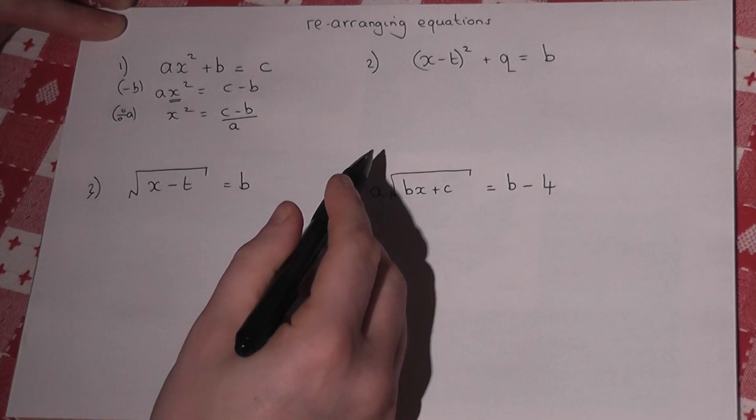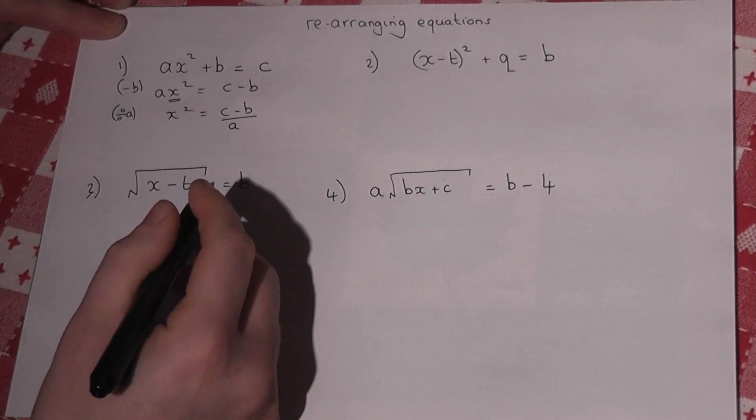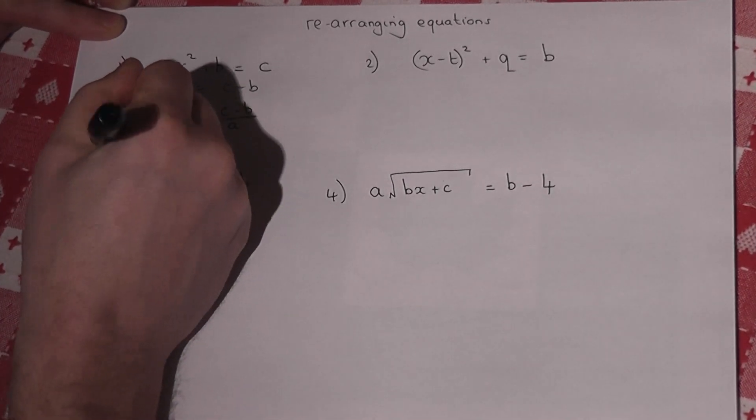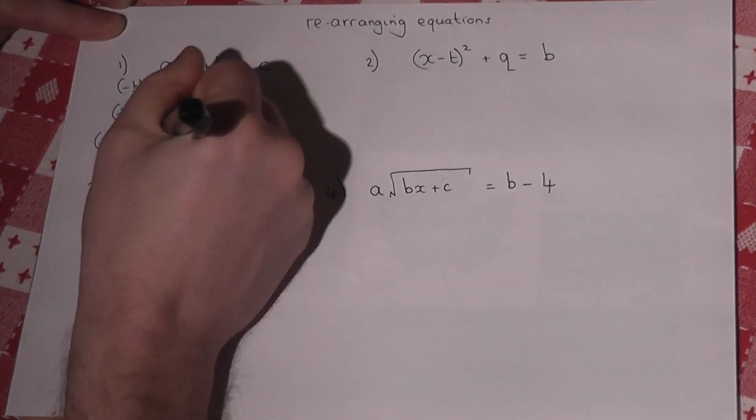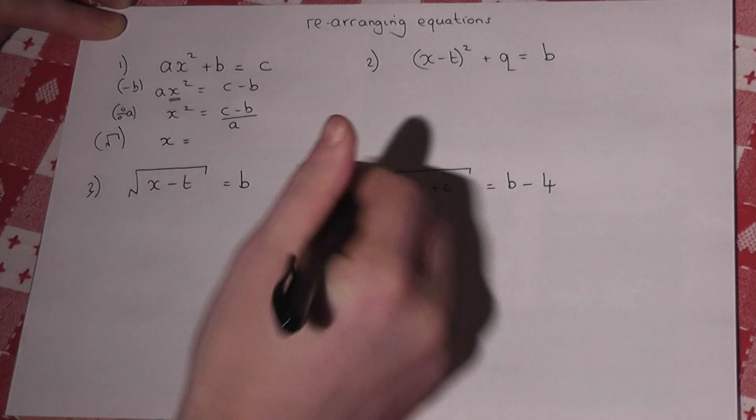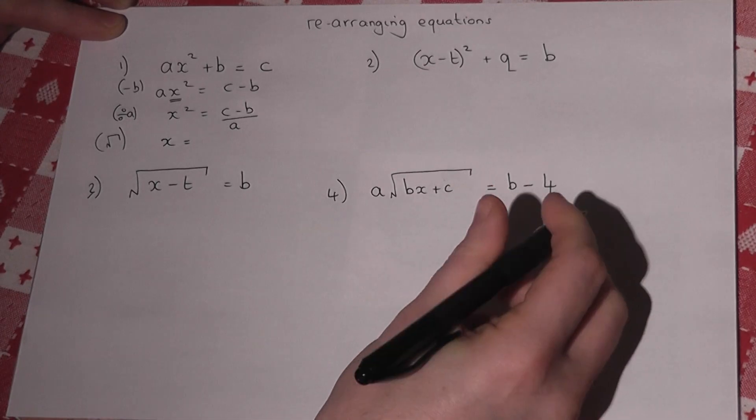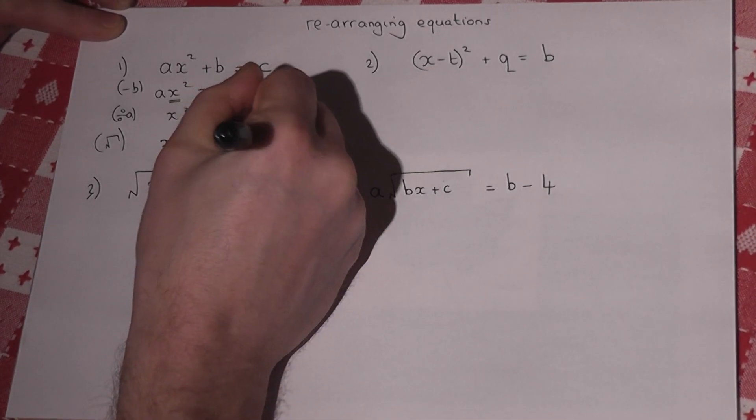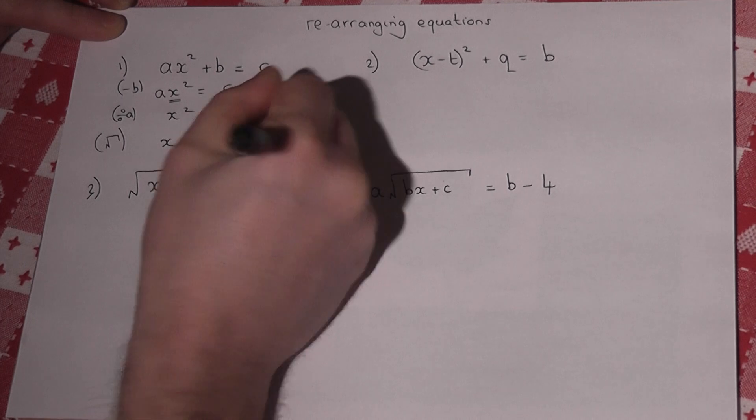That's now x squared equals, so to get x by itself, I finish off with a square root. So x will equal, and I'll just put a big square root over that entire fraction, so square root of c minus b over a.